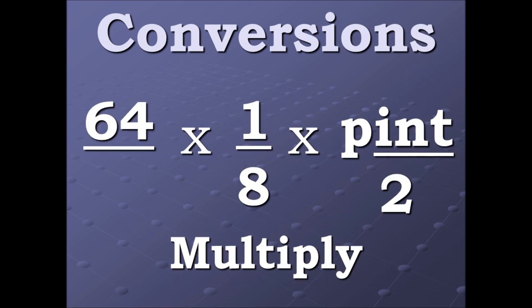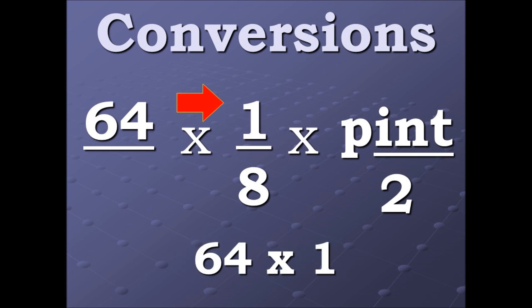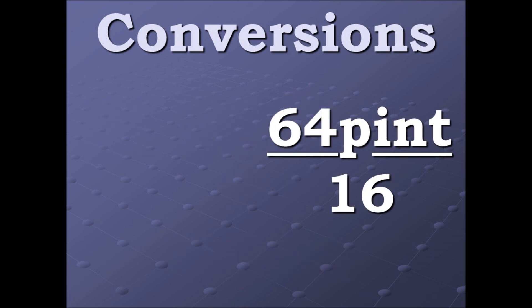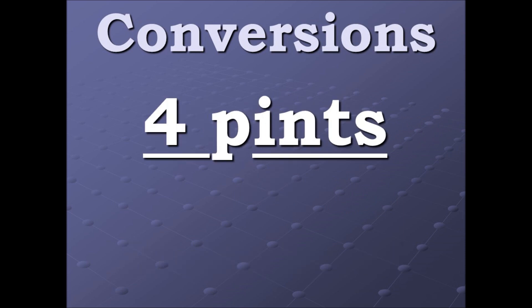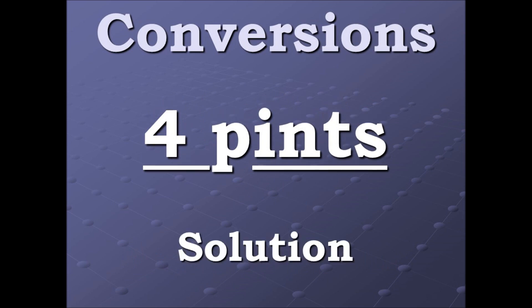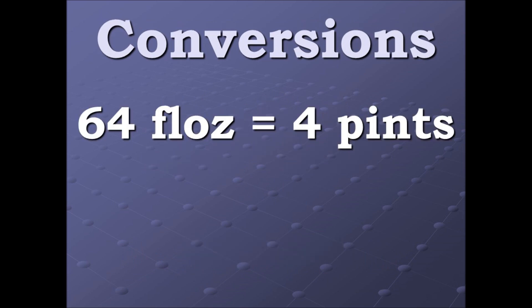Now we multiply. Now we divide by 16. And here's our solution. Four pints. So 64 fluid ounces is equal to four pints.